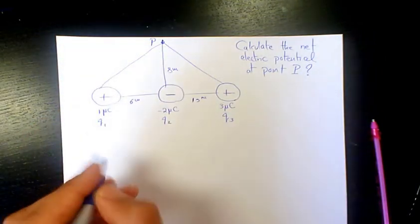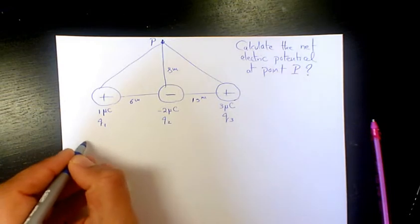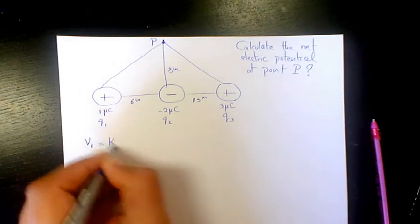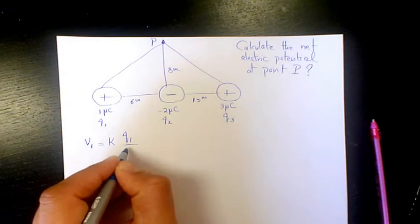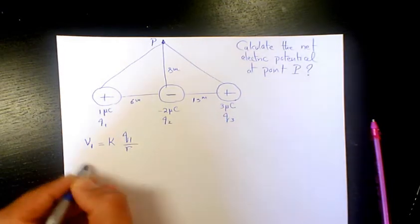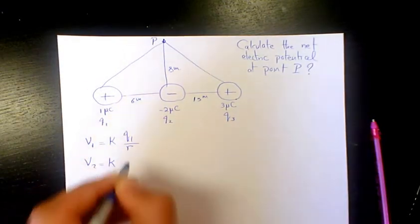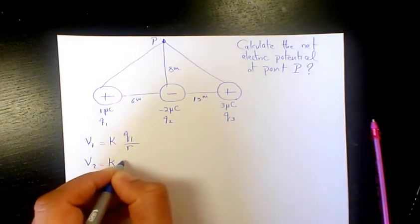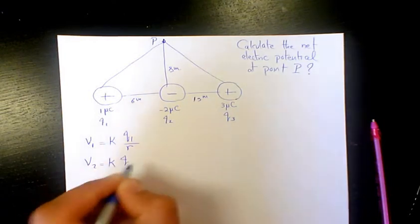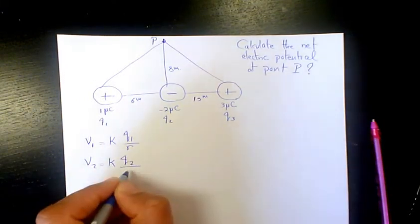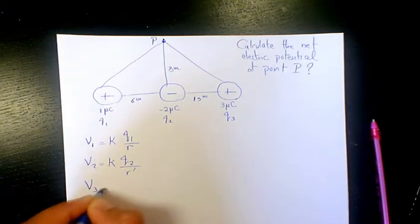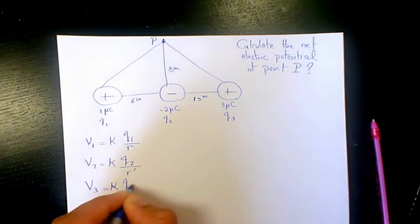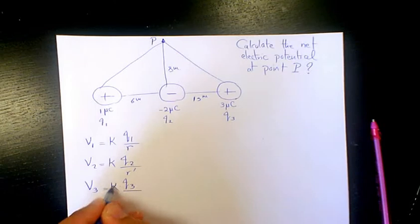So the first one: V1 is kQ1 over R. V2 is going to be kQ2 over R prime, and the other one is kQ3 divided by R double prime.